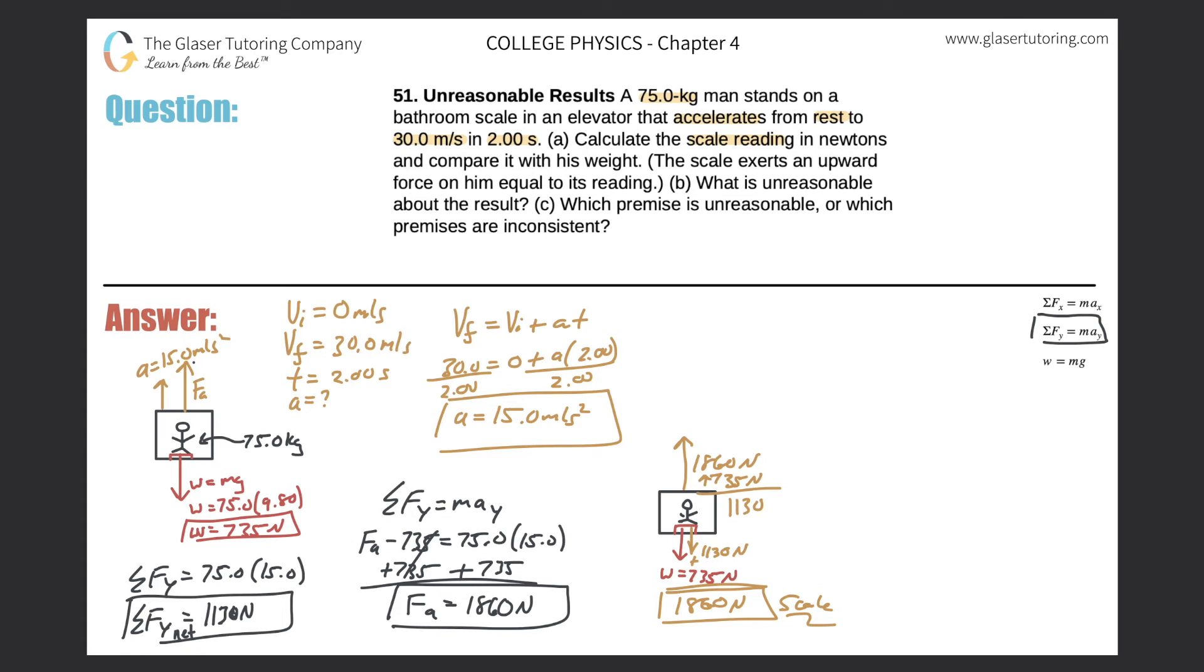Now, how does this compare with his weight? He's taking a nap; I don't know if you can tell, but that's nap time. What we do is a simple ratio, so we do 1860 over his initial weight of 735 to get a quick ratio. So we get 1860 over 735, and we get 2.53. The scale would read 2.53 times, or two and a half times greater than what his weight would actually be.